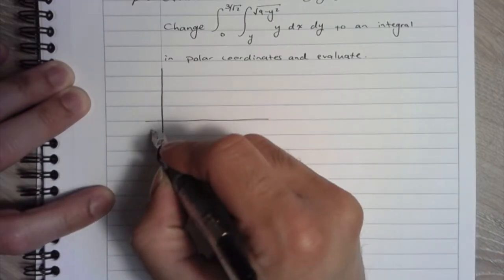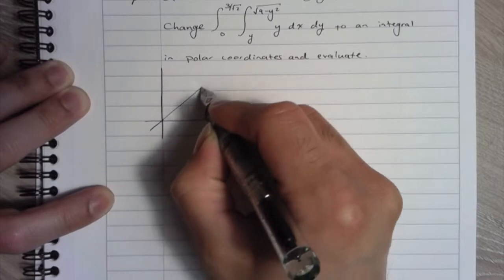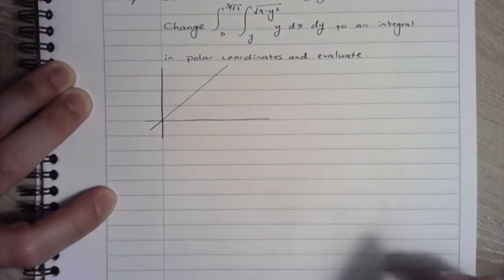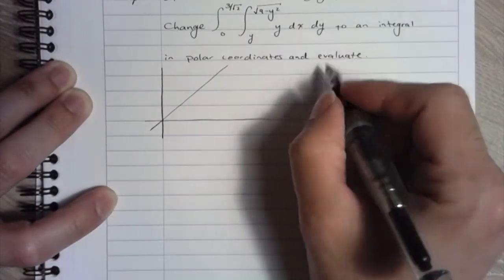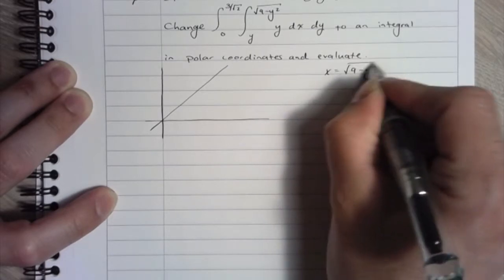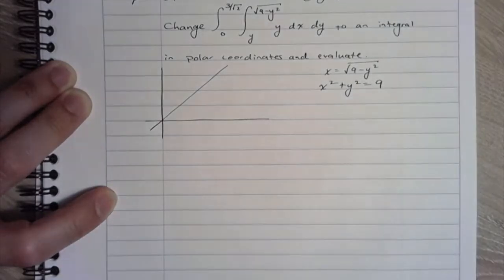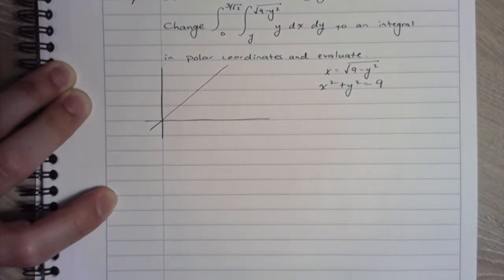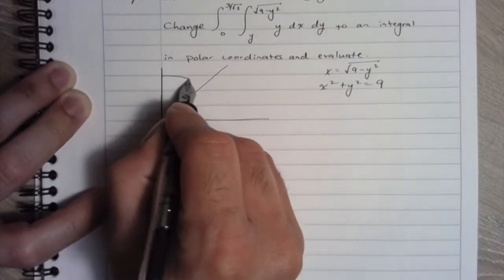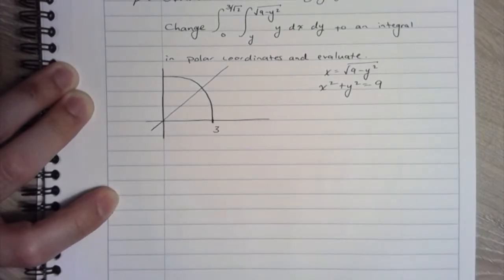All right, so I'm going to graph y equals x. And I'm going to graph this x equals root 9 minus y squared. And if you rewrite this, so if I were to write x equals root 9 minus y squared, we can rewrite it as x squared plus y squared equals 9, which is a circle centered at the origin with a radius of 3.